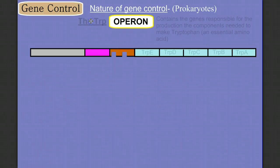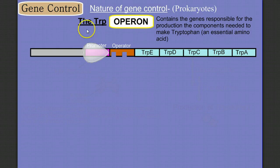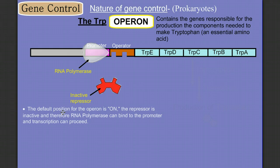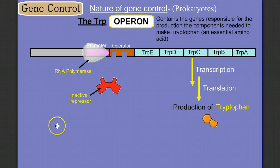Let's look at a couple of specific examples, starting with the trp operon. The trp operon contains a series of genes responsible for production of components needed to make tryptophan, an essential amino acid. In the trp operon, RNA polymerase will bind to the promoter region of the DNA. There is a repressor molecule, but in this case the repressor is inactive. As a result, the default position for this operon is on. RNA polymerase can bind to the promoter and transcription can proceed, leading to production of tryptophan.